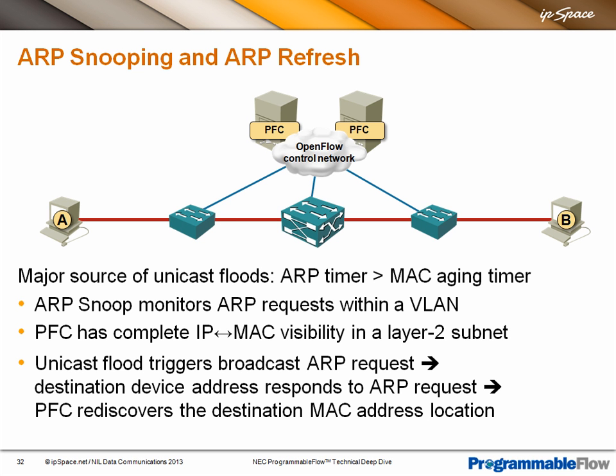Is there a hybrid mode in non-intelligent forwarding devices to fall back to ARP and normal protocols if the PFC suddenly breaks? No — you can't have virtual tenant networks configured in PFC and then revert to a fallback mode if PFC breaks, because that could create security problems.